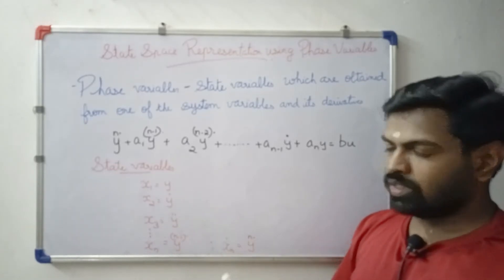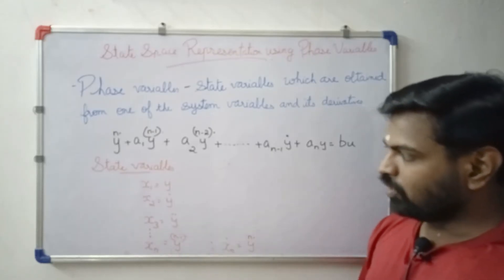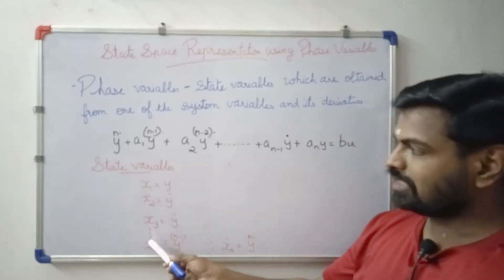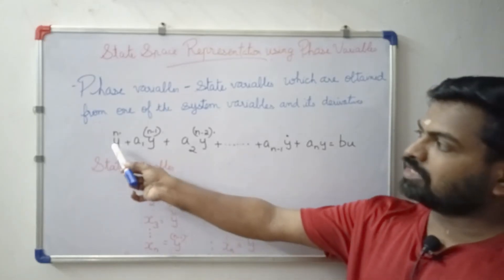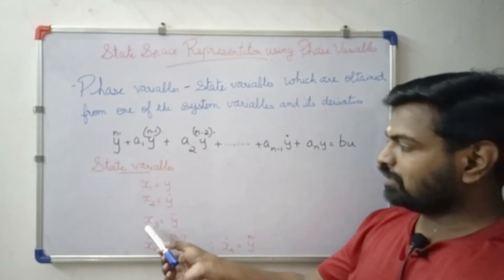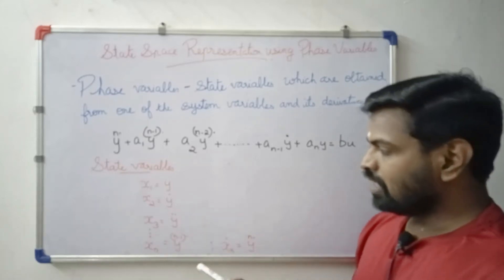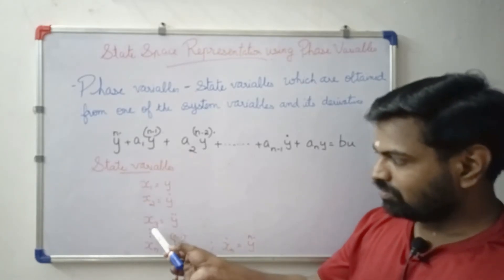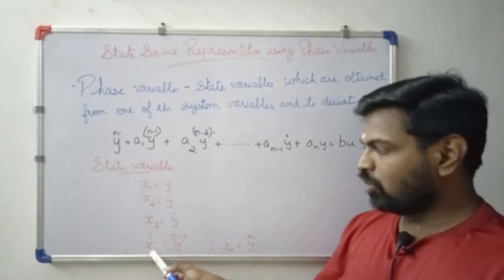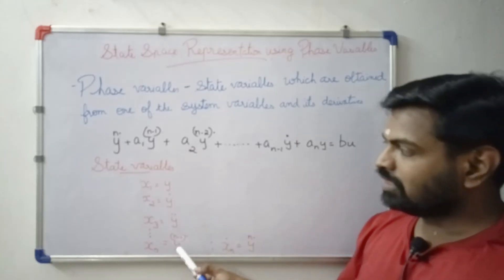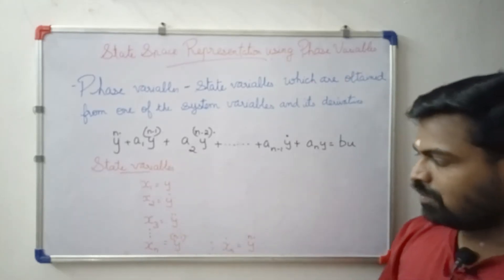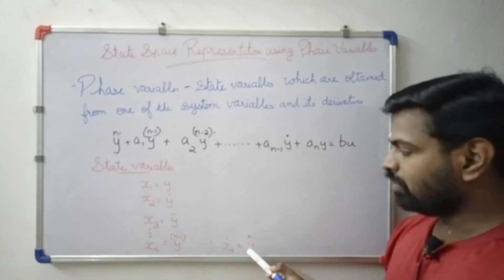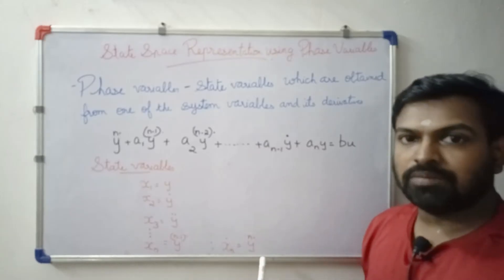We define the phase variables as: x2 is equal to y-dot, and x3 is equal to y-double-dot. In general, xn is equal to y to the power (n-1), representing each successive derivative up to x2 equals y-dot.